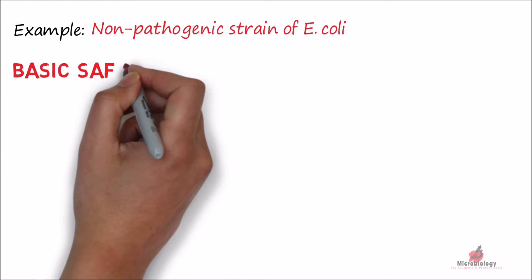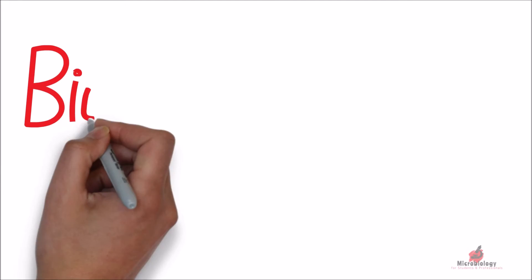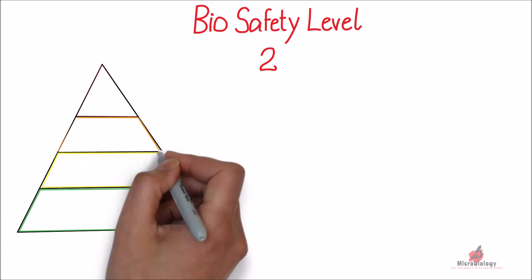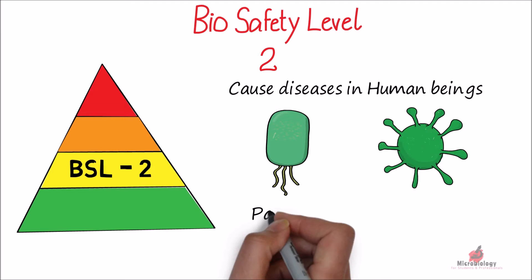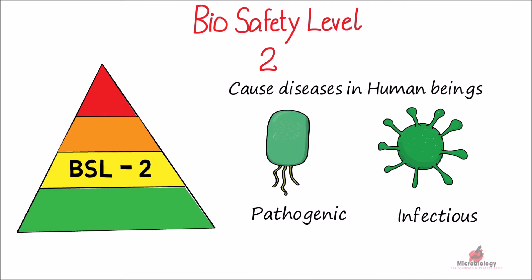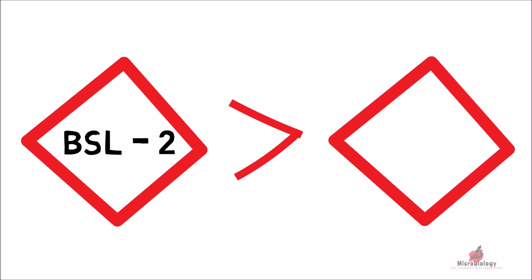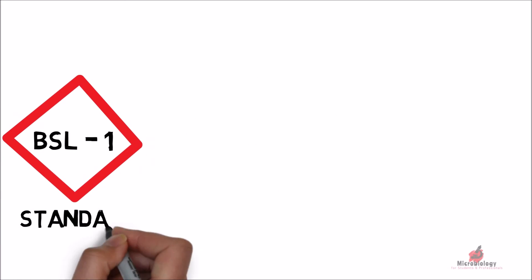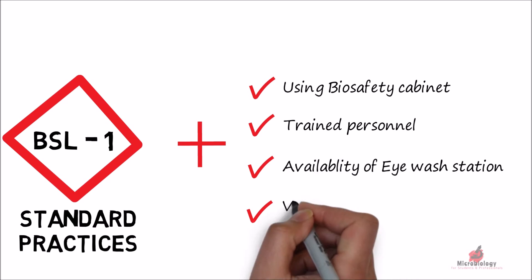However, basic safety practices must be followed in these facilities. Biosafety Level 2 is for microbes that are associated with human diseases — that means pathogenic or infectious bacteria and viruses are included in this level. Examples of BSL-2 microbes include Staphylococcus and Hepatitis virus. BSL-2 labs are expected to have more controls than BSL-1, and in addition to the standard laboratory practices of BSL-1, additional practices must be followed.